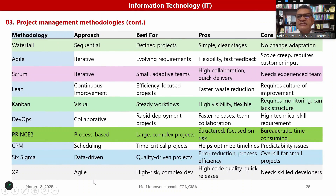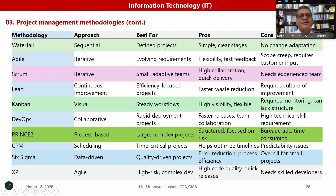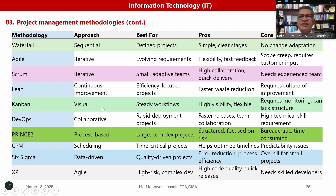Here is the summary of methodologies discussed. Waterfall uses a sequential approach best for defined projects — positive: simple and clear; negative: no change adoption. Agile uses an iterative approach best for evolving requirements — positive: flexible and fast feedback; negative: scope creep and heavy customer input. Scrum uses an iterative approach best for small projects or adaptive teams — positive: high collaboration and quick delivery; negative: needs an experienced team. Lean is a continuous improvement approach best for efficiency-focused projects — positive: faster waste reduction; negative: requires cultural change. Kanban is a visual approach best for steady workflow — positive: highly visible and flexible; negative: requires monitoring and can lack structure.